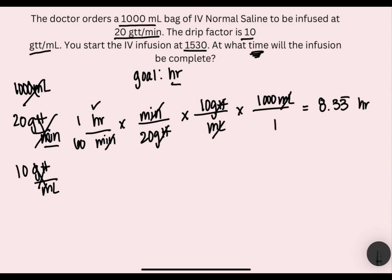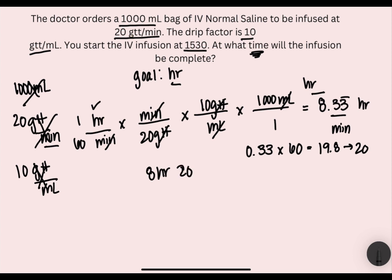We need to find out how many minutes is 0.3333, because everything behind the decimal is your minutes and everything in front of the decimal is your hours. So we'll take 0.33 times 60 — because there are 60 minutes in an hour — and multiply that together to get 19.8, which rounds to 20 minutes. So our total time is 8 hours and 20 minutes.